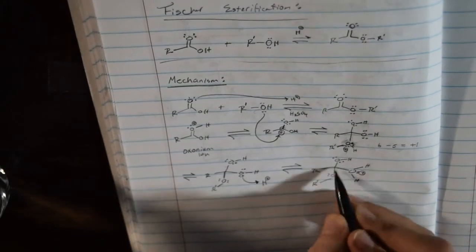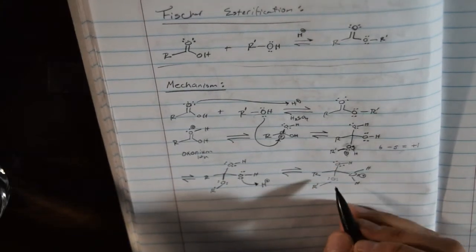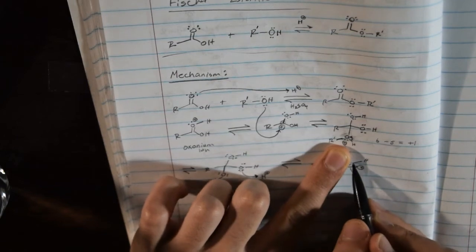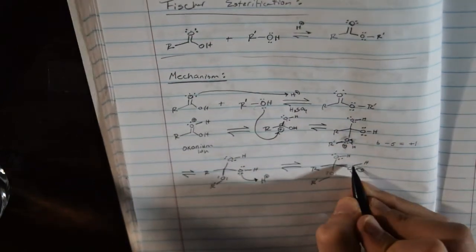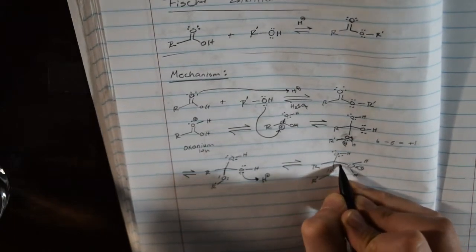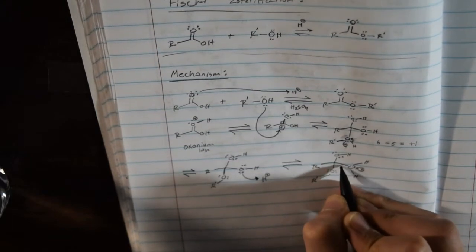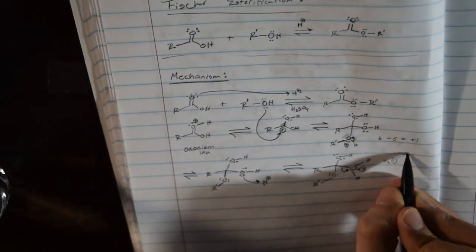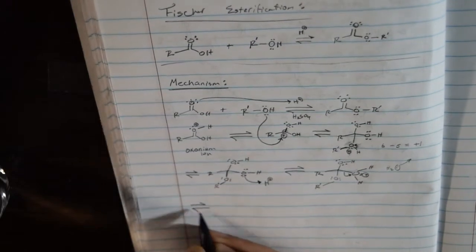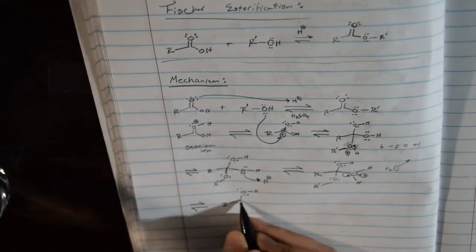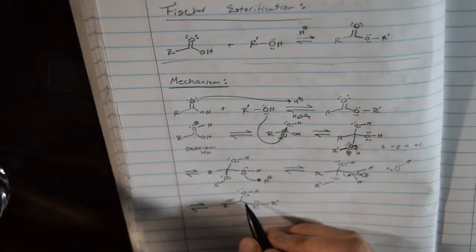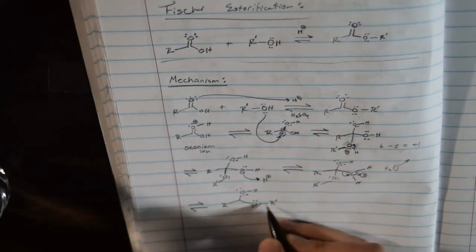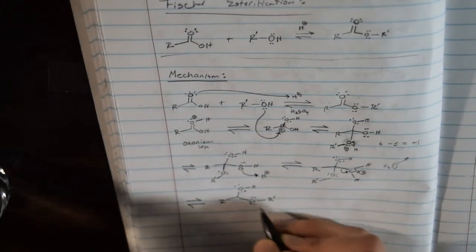After we get this structure, it contains a very good leaving group. What we have here is essentially water without one lone pair of electrons. Since it's a good leaving group, the bonded electrons between the carbon and oxygen go into the oxygen, making water, which leaves into solution. We get this new structure, with the R-prime ether group repositioned.